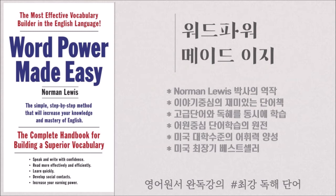The word 'insect' makes the same point — 곤충이라는 뜻의 insect란 단어도 같은 내용을 담고 있습니다. It is built on Latin: in plus sectus, a form of the verb meaning 'to cut.' 내부라는 뜻의 in과 자르다라는 의미를 가진 동사의 한 형태인 sectus가 결합된 말입니다.